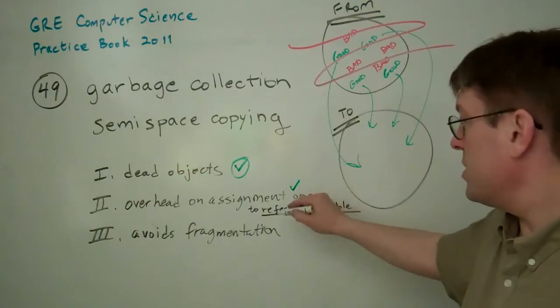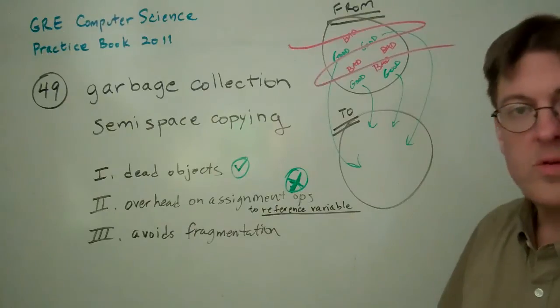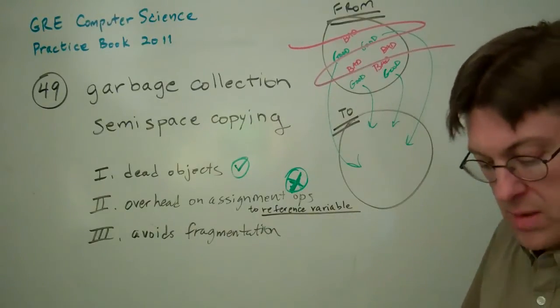So a given variable can have multiple names, but there's no more or less overhead being used than there was before. So assignment operations, I don't even know what that's all about. There's no additional overhead on it.